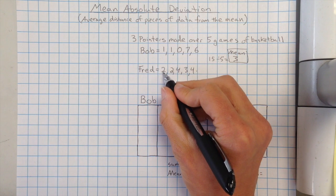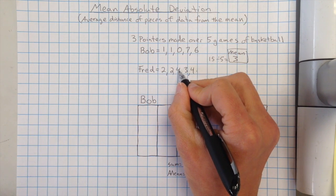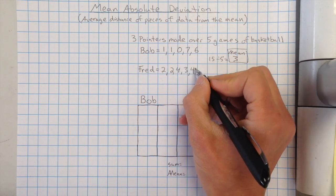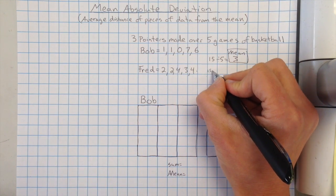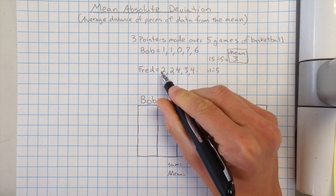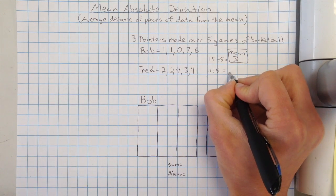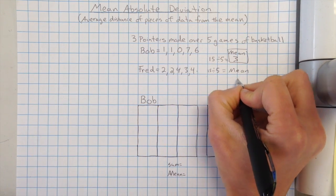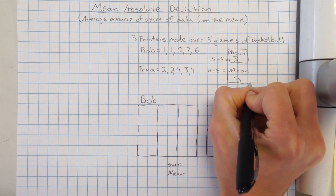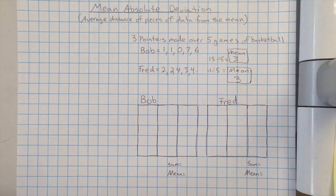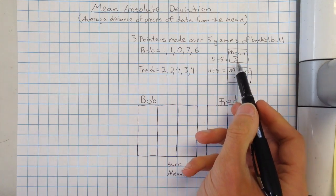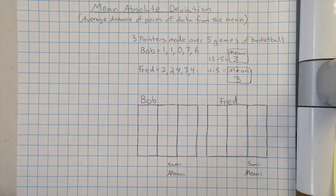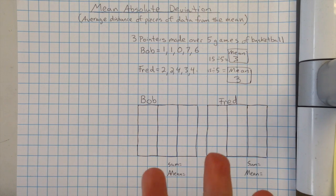If we take Fred and we added all his together, two plus two is four, plus four is eight, nine, ten, eleven, and he also had fifteen. So fifteen, we divide it by five because there were five scores. We would also get a mean of three. So what we're seeing here is if I just told you that Bob has a mean of three and Fred has a mean of three, it would sound like they're the same, and they do just as well as each other.